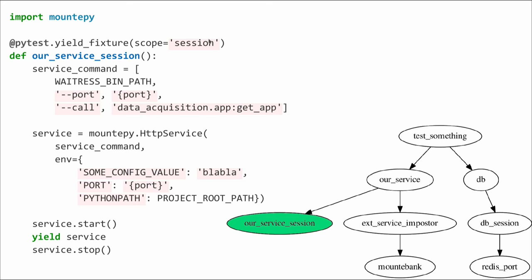The service has a command in standard popen notation — an array of strings. I've been using Waitress, a WSGI server like Gunicorn or uWSGI. You create a service object, supply the command and environment variables — because you configure your service through environment variables. There's a port notation: if you don't want to specify the port yourself, mountepy will give you a free port. You start the service, return the object to the test, and stop it after the tests. No trash after tests.